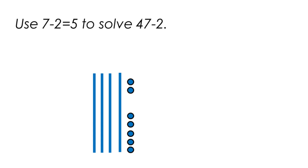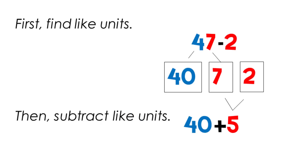Use seven minus two equals five to solve forty-seven minus two. First, find the like units. In the number forty-seven, there are four tens and seven ones. And in the number two, there are two ones. So the like units are seven and two. Seven minus two is five, so we can say that the answer is forty plus five.